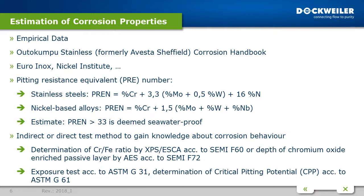The indirect test methods are complex — you need an electron microscope to determine, for example, the chromium-to-iron ratio using XPS-ESCA according to SEMI F60, or the depth of the chromium oxide-enriched passive layer by AES according to SEMI F72. This requires a third-party inspection, and one sample costs around 1,000 euros — very expensive and time-consuming.